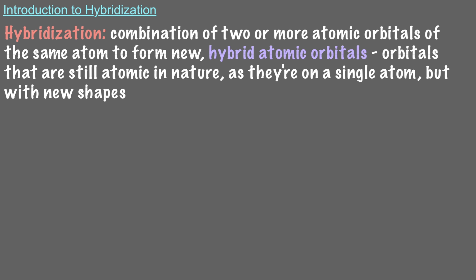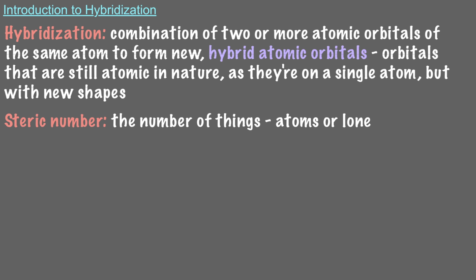The number of atomic orbitals that are combined to form the hybrid orbitals depends on the steric number of the central atom — the number of things, atoms, or lone pairs around the central atom.